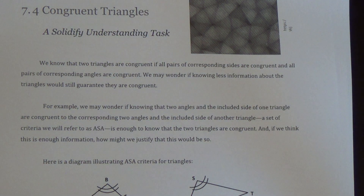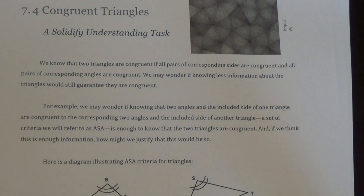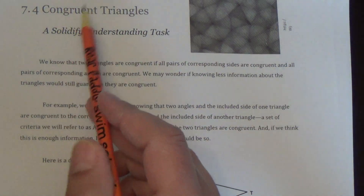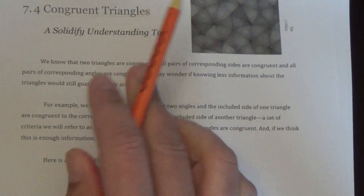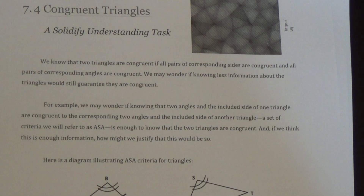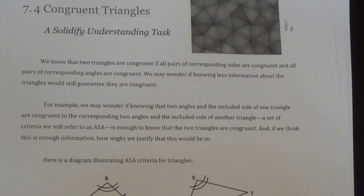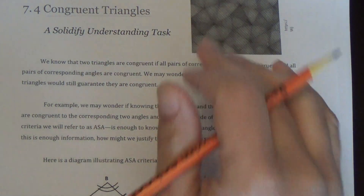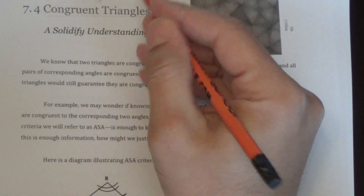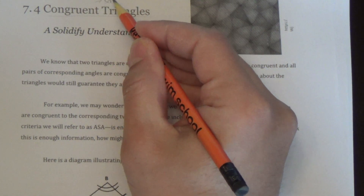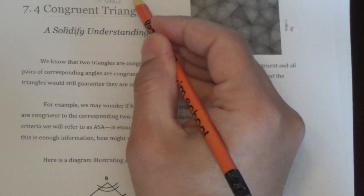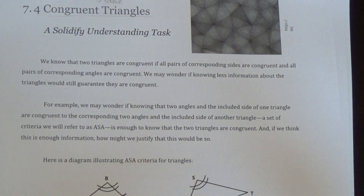Hopefully we all have our packet still from Module 7. We would be going today to 7.4, where you would see at the top: congruent triangles. We've thrown around the word congruent a little bit and we're going to continue to do that, especially here in these next few sections. The idea of congruent, not in the pure math sense, but loosely, means for the most part it's the same triangle.